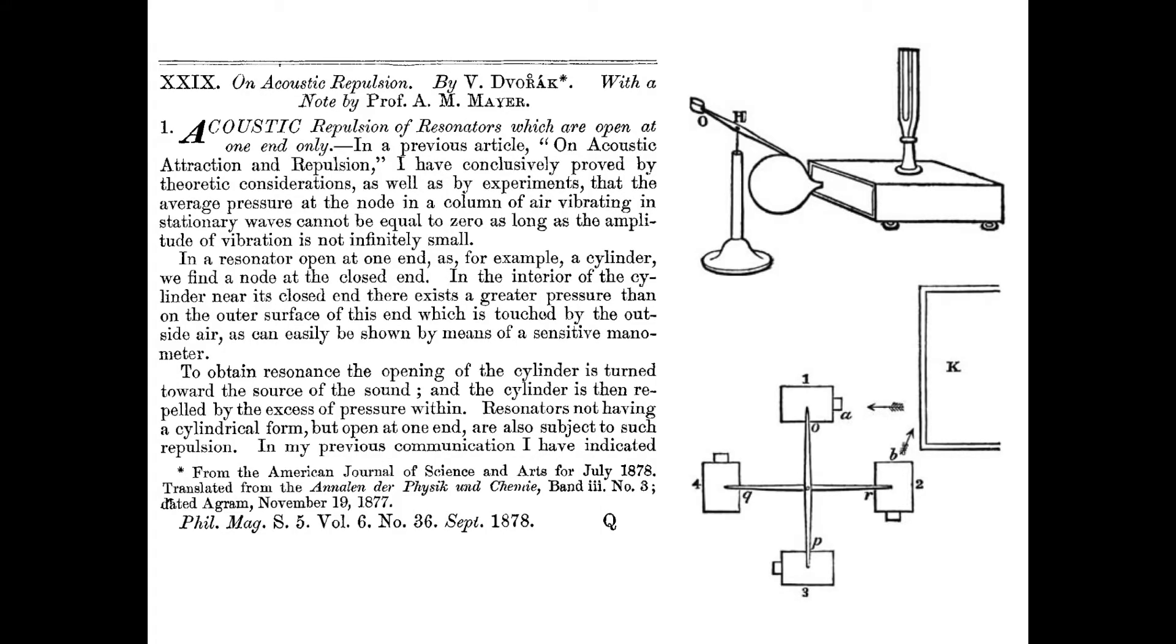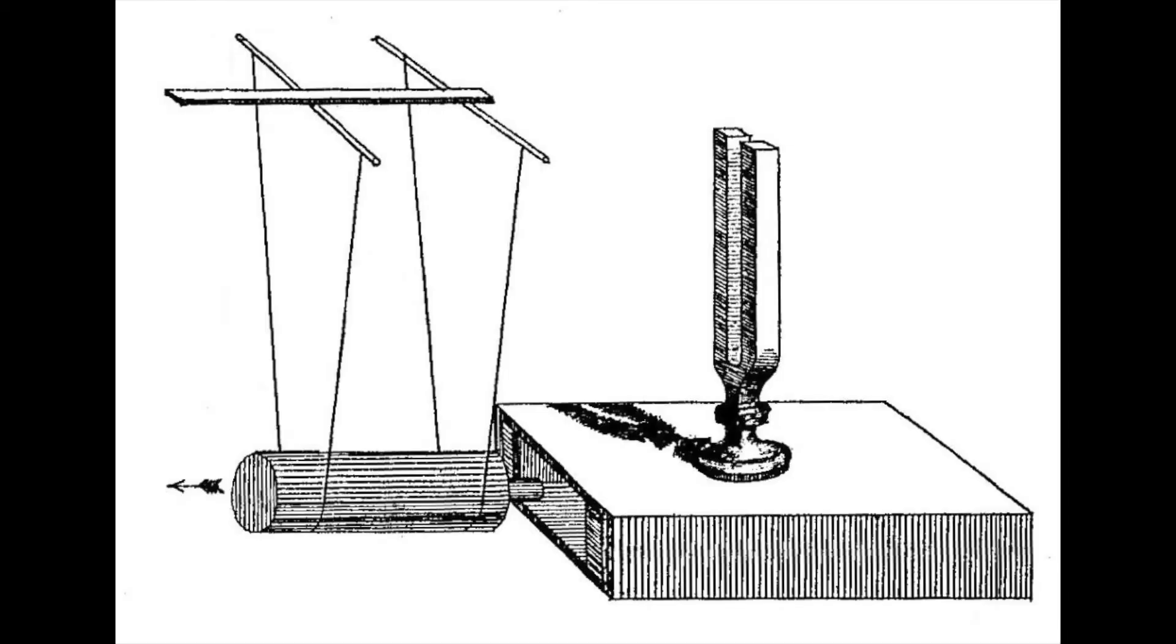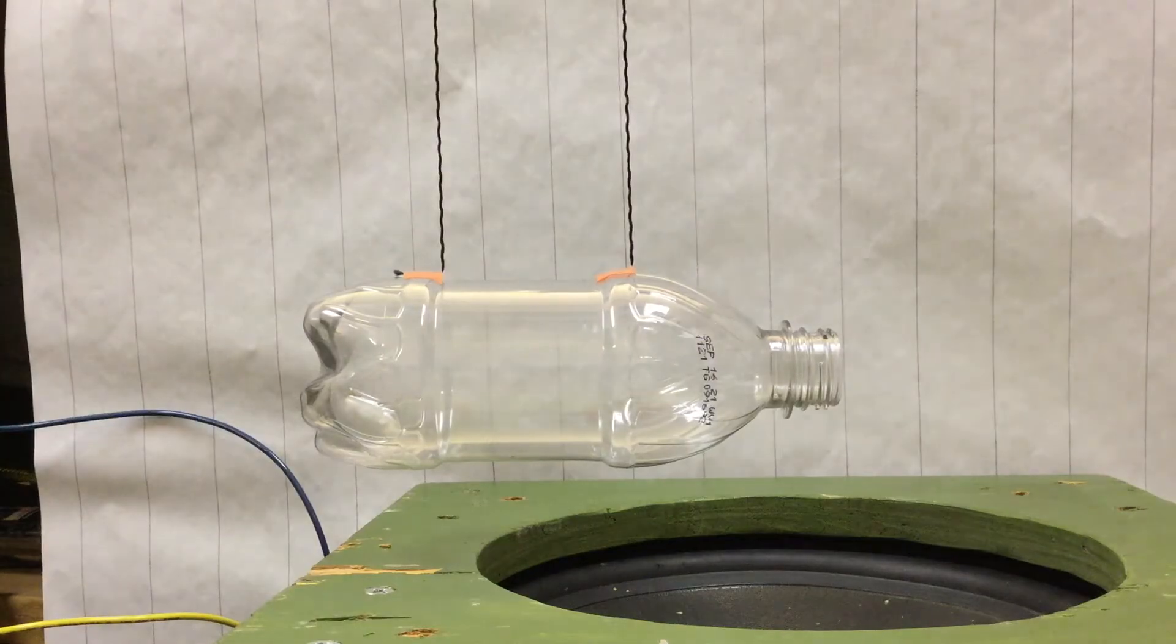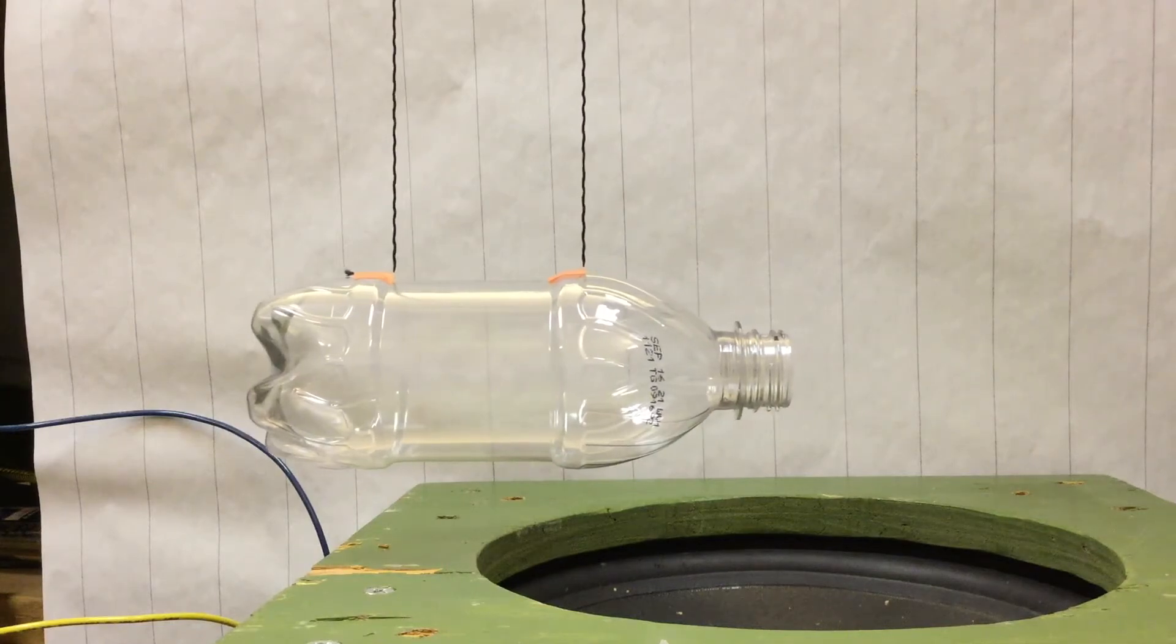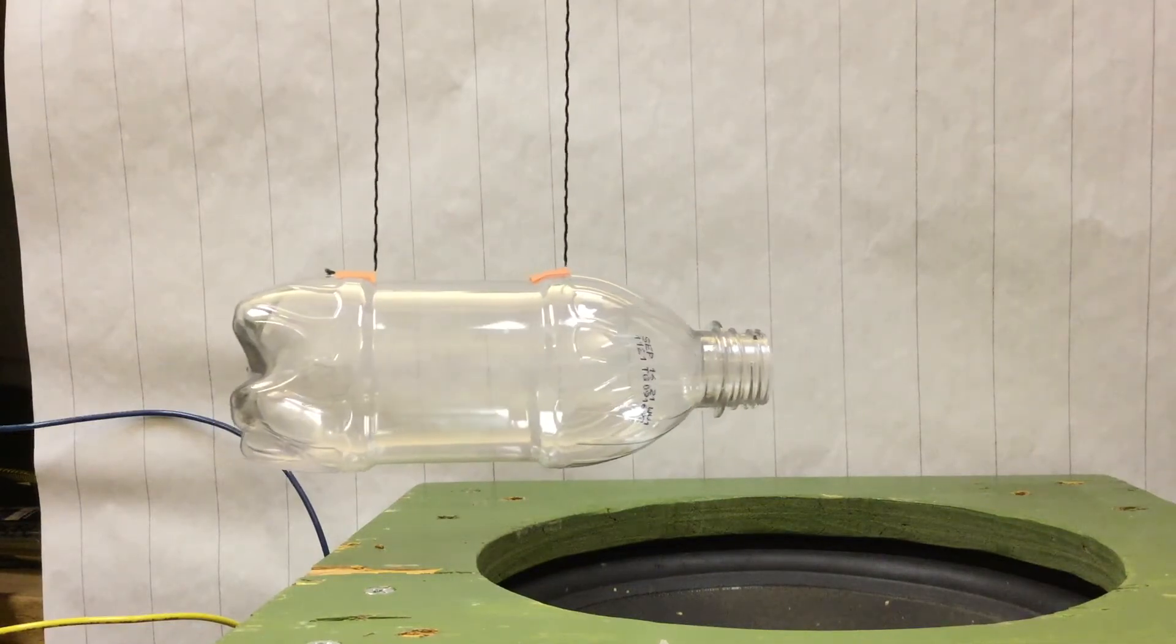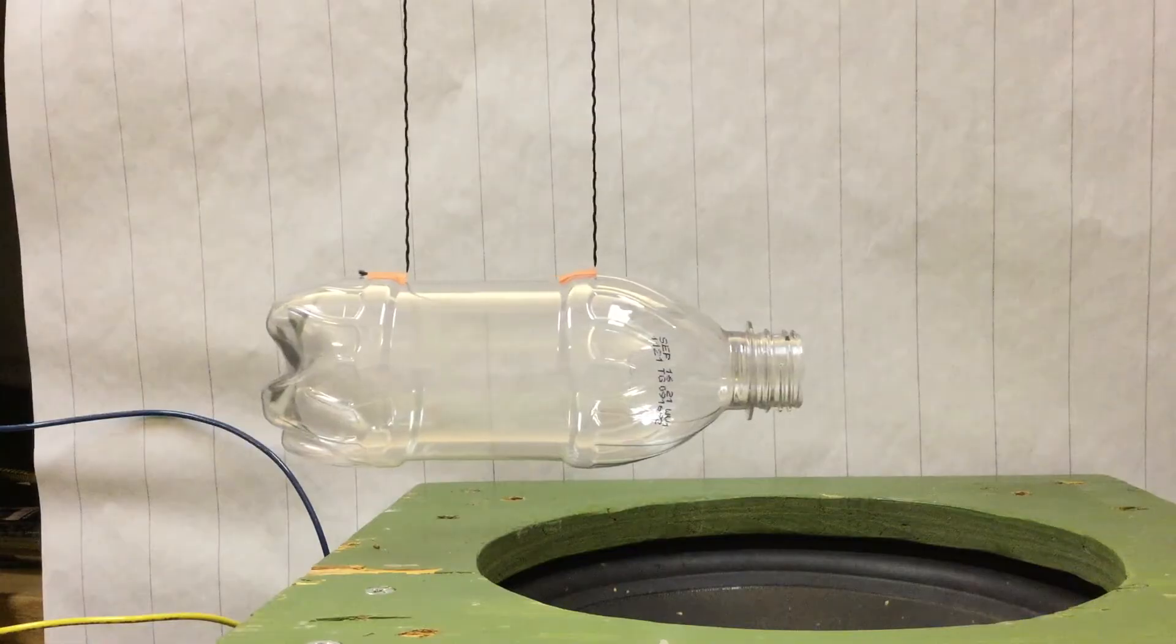So why did Dvorak call it acoustic repulsion? In 1876, Dvorak observed that a lightweight cylindrical resonator suspended in front of a tuning fork resonator box at the same frequency would be repelled. Here's my version of Dvorak's 1876 demonstration. I suspended a single bottle in front of a grid-lined background so we can observe it be pushed away from its equilibrium position because of the jet of air coming from its mouth.